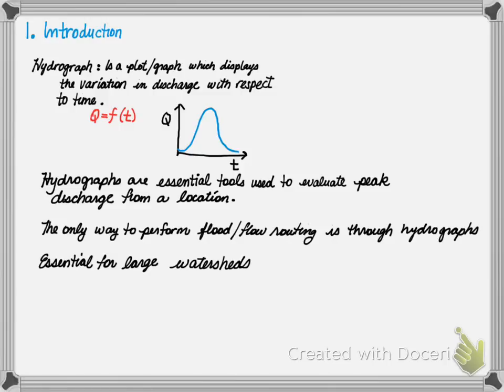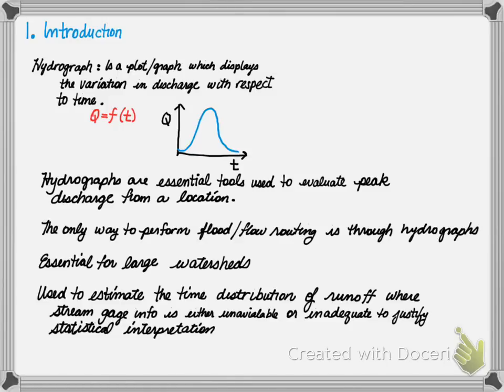Thus, hydrograph analysis is essential for large watersheds. Finally, it is used to determine the time distribution of runoff when stream gauge information is either unavailable or inadequate to justify statistical interpretation. Thus, hydrograph analysis is used in design conditions when real data is unavailable.